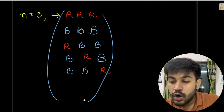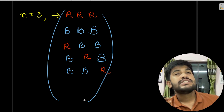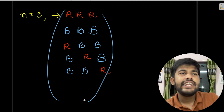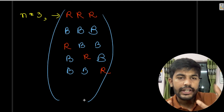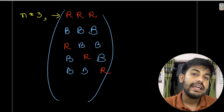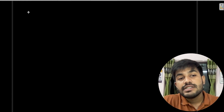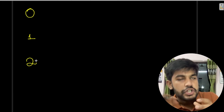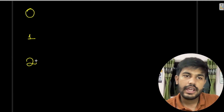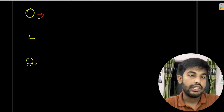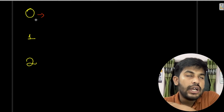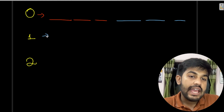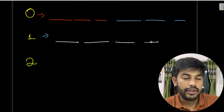Since writing out all cases for n=5 or n=6 would be impractical, we take a smarter approach — a 'tunnel vision' strategy. We split into three scenarios: zero touching positions, one touching position, and two touching positions. Touching here means a red ball is adjacent to a blue ball.